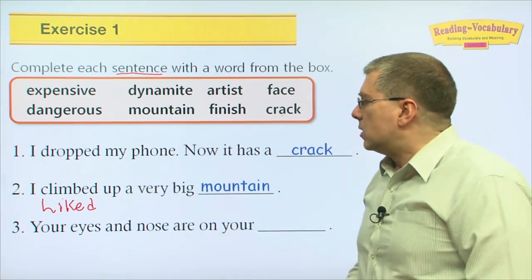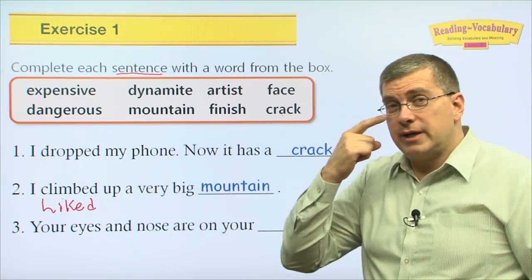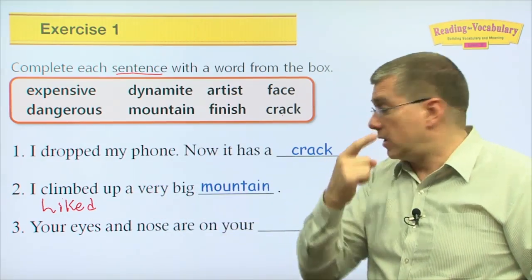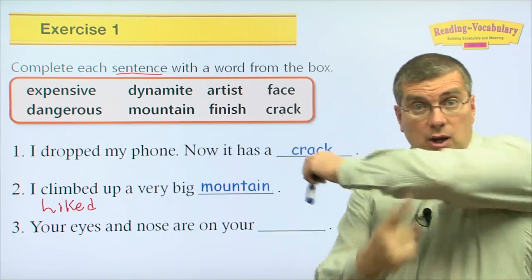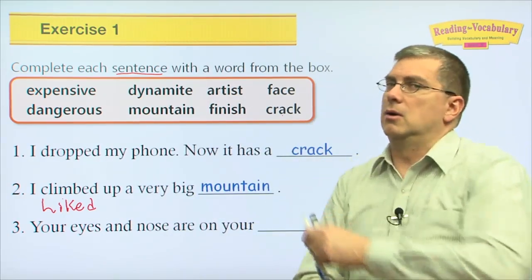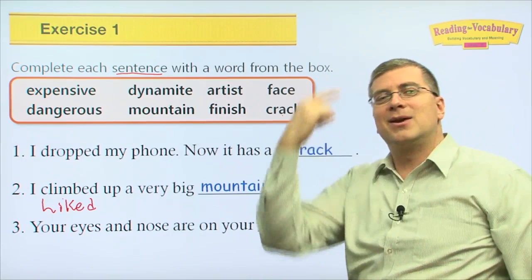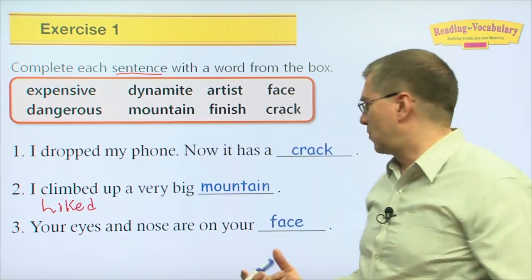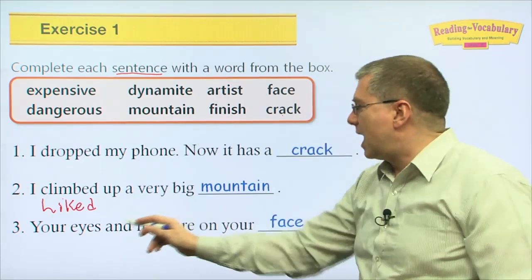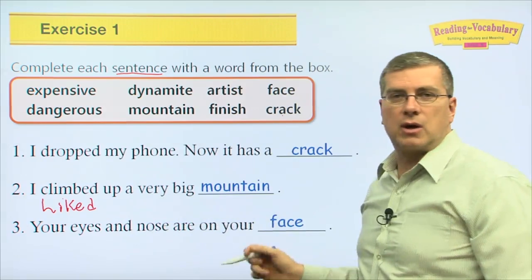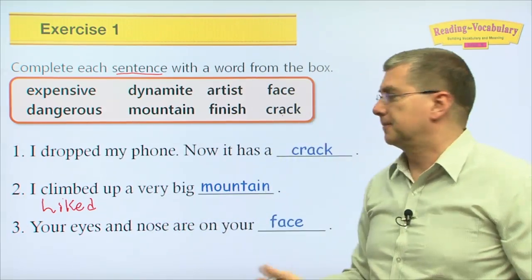Number three — your eyes and your nose are on your what? On your elbow? No. On your knee? No. They're on your face. Of course — that's easy. Your eyes and nose are on your face.